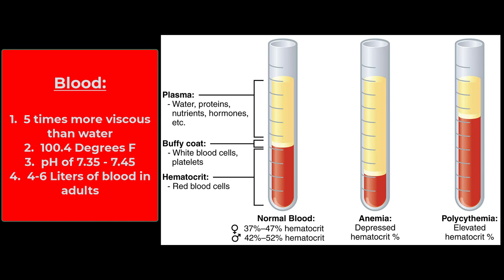Blood is thicker than water, like you've heard. Blood is about five times more viscous than water, which means it's resistant to flow — more syrupy than water. That's what viscosity means. Like I just mentioned, blood is warmer than the rest of your body. Your normal core temperature is 98.6 degrees Fahrenheit. Blood usually runs at 100.4 degrees. It has to do with the friction and the resistance in your blood vessels. Even when you're young and you have healthy, smooth blood vessels, there's some resistance and friction that actually heats things up.